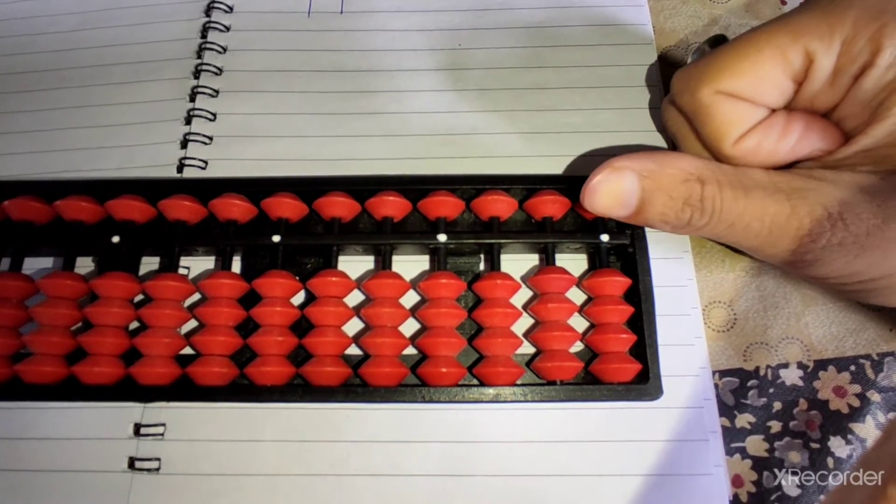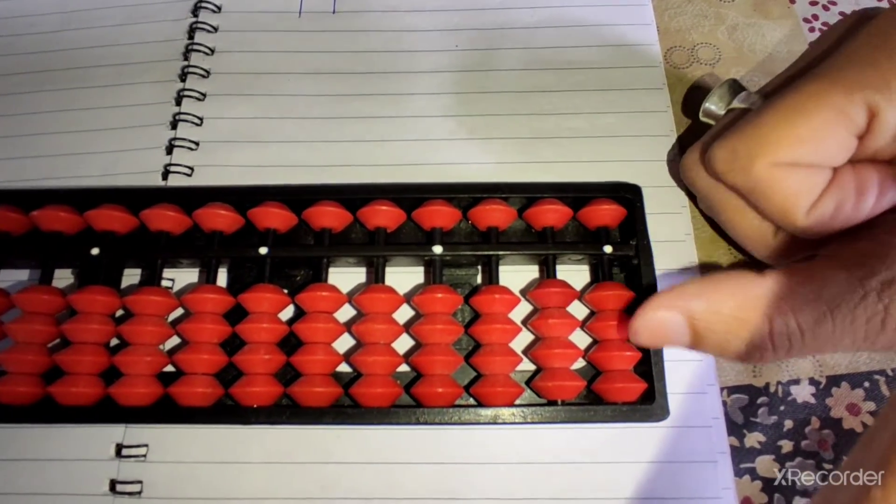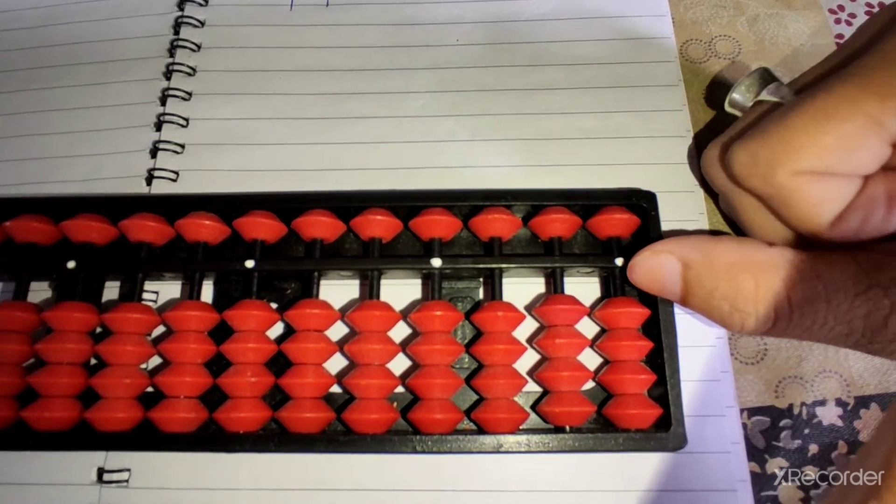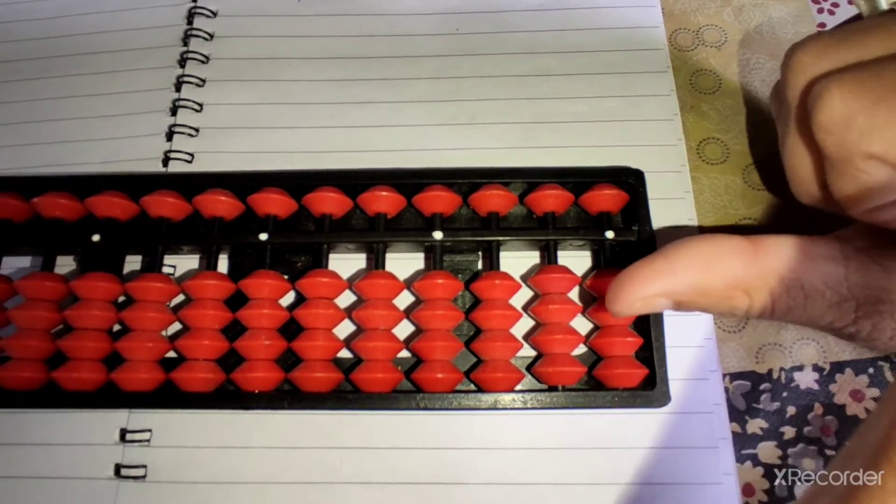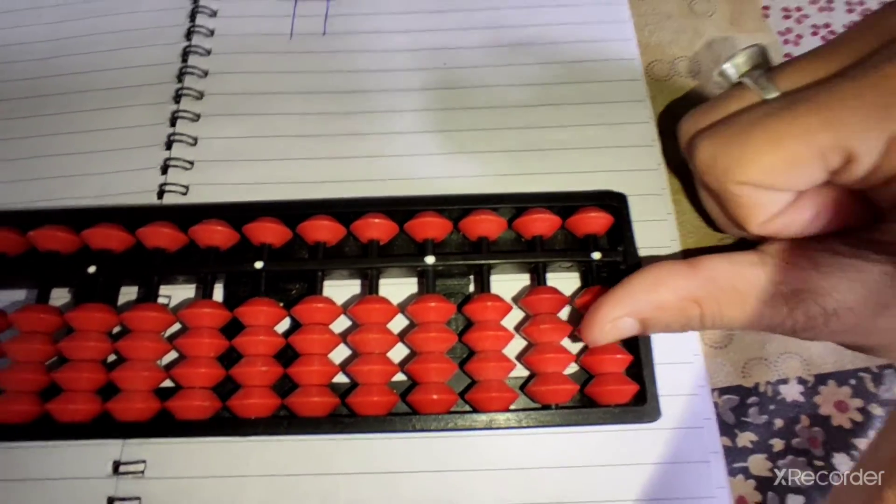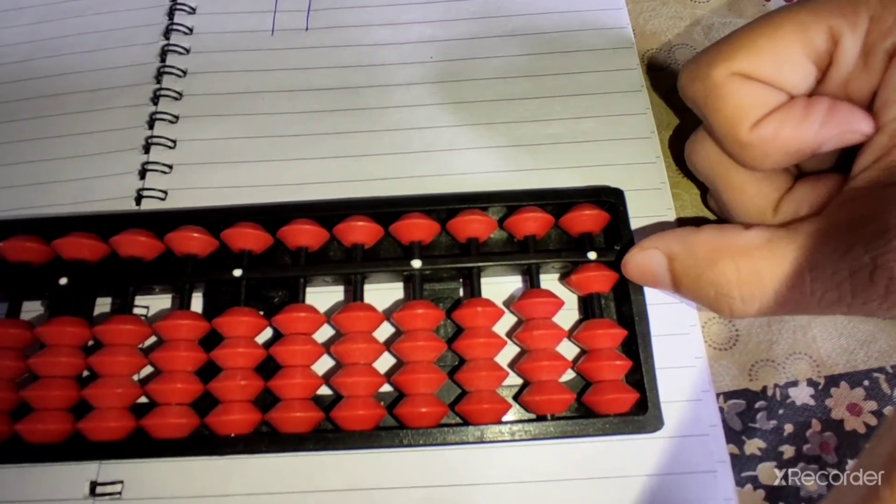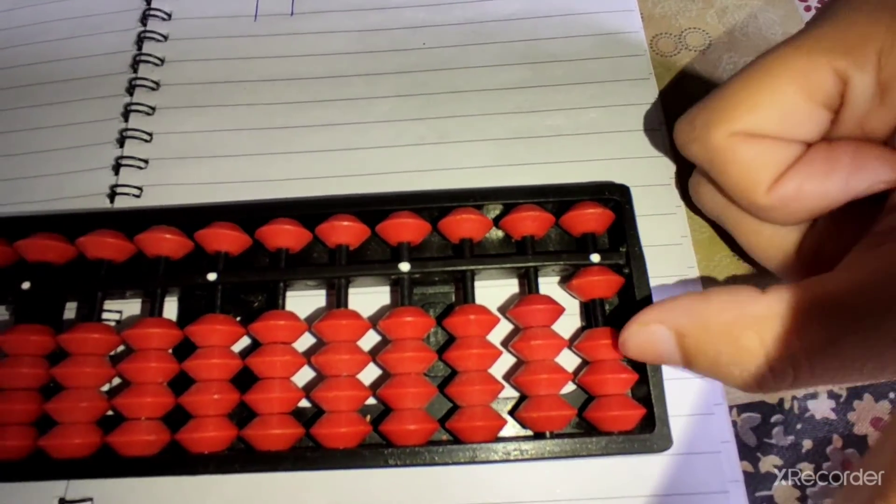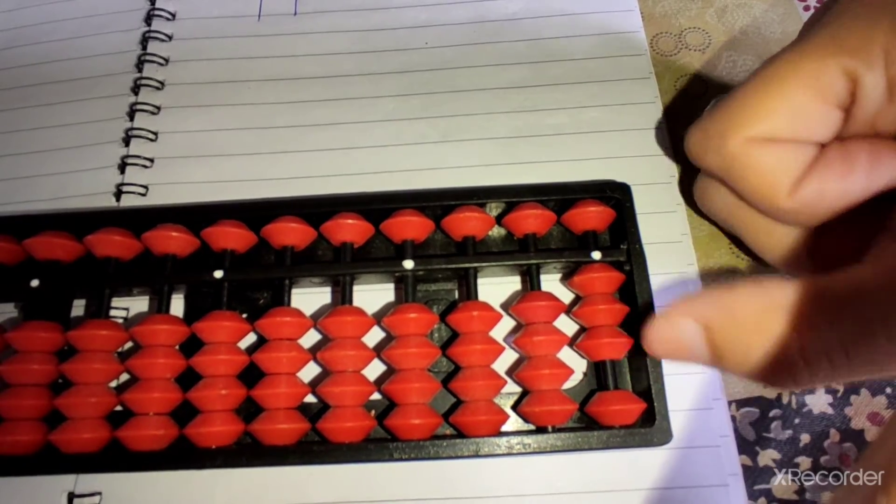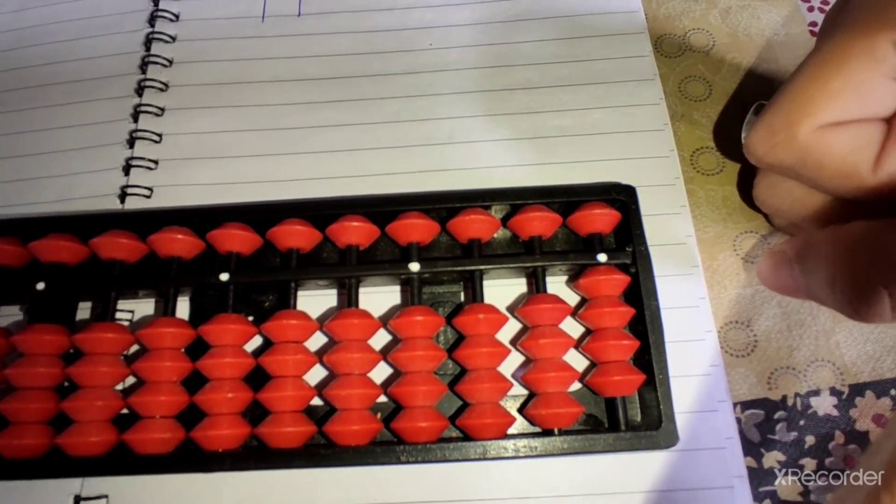For addition of lower beads. Addition means moving the beads near to the answer line. So, addition of lower beads, always use your thumb. 1, and the beads should touch the answer line. 2, 3, 4. Like this.